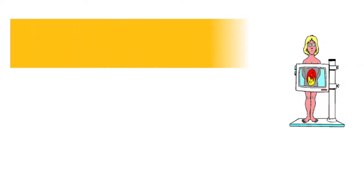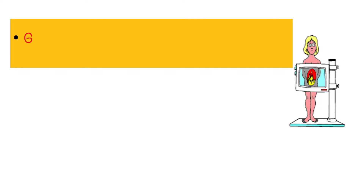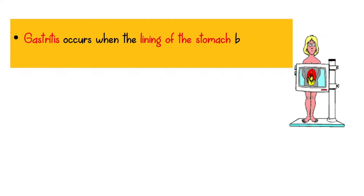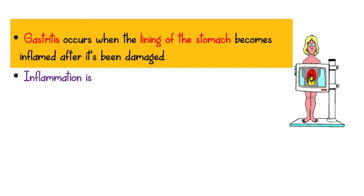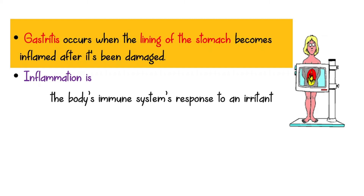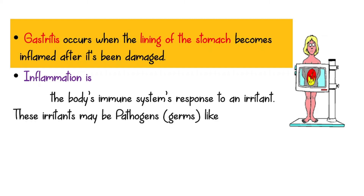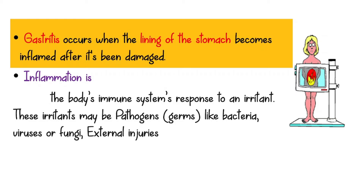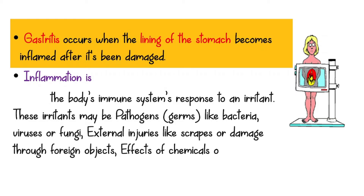In simple terms, gastritis occurs when the lining of the stomach becomes inflamed after it's been damaged. The word inflamed should be defined a bit. Inflammation is the body's immune system's response to an irritant. These irritants may be pathogens — germs like bacteria, viruses, or fungi — external injuries like scrapes or damage through foreign objects, or effects of chemicals or radiation.